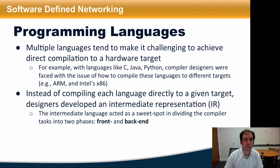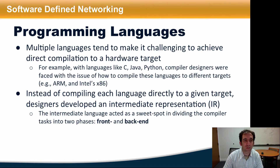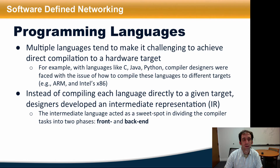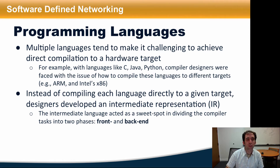To understand the motivation for an intermediate representation, it helps to think about the history of programming languages and how compilers for those developed. Having multiple high-level languages can make it difficult to achieve direct compilation to a hardware target. For example, with languages like C, Java, and Python, compiler designers faced the issue of how to compile these languages to different targets. Instead of compiling each language directly to a given target, designers developed an intermediate representation that divided the compiler tasks into two phases, a front-end and a back-end.